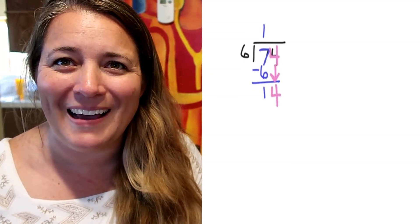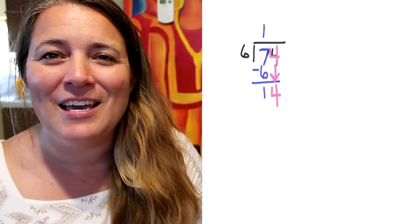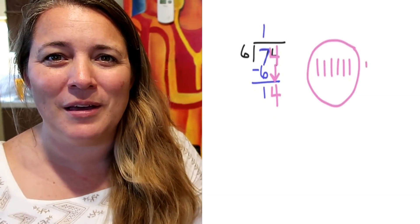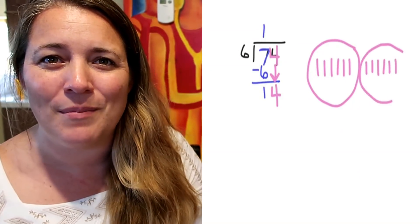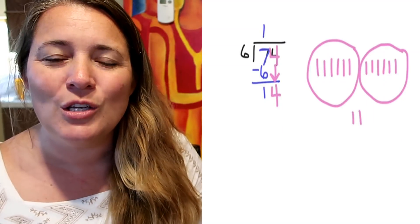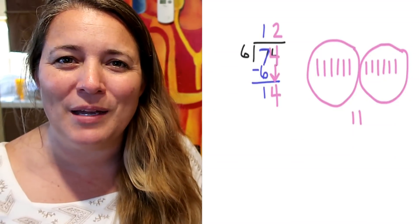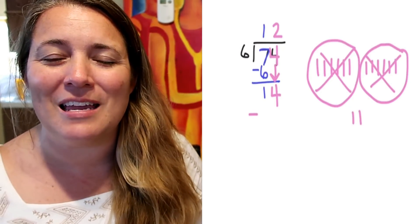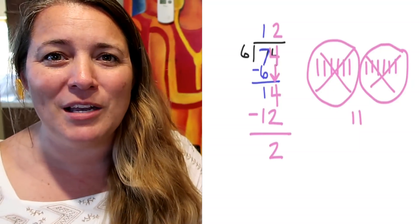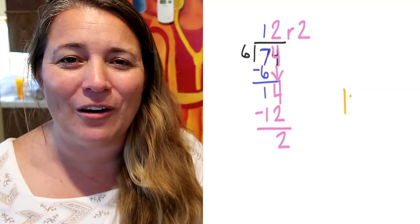Next, we bring the 4 down. When we bring the 4 down, the new number is 14 — so we have 14 sticks. We draw them out: 1, 2, 3, 4, 5, 6 — stop, make a group. 7, 8, 9, 10, 11, 12 — stop, make a group. 13, 14 — I can see 2 groups of 6 with 2 left over. We put the 2 up top, subtract 12: 14 minus 12 is 2, which matches our picture. This is called a remainder — pieces that wouldn't fit into the group — so our final answer is 12 remainder 2.